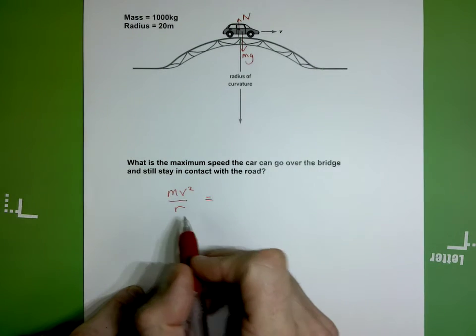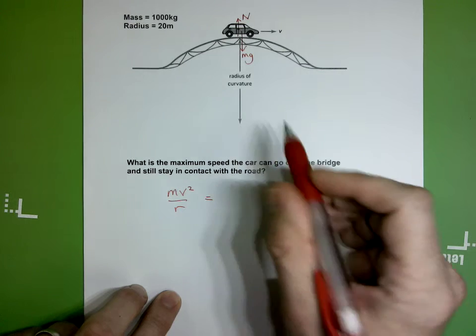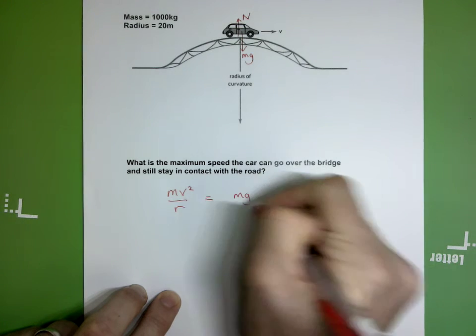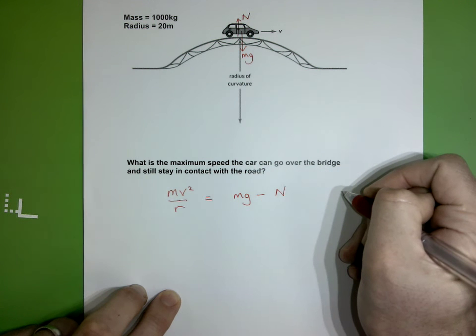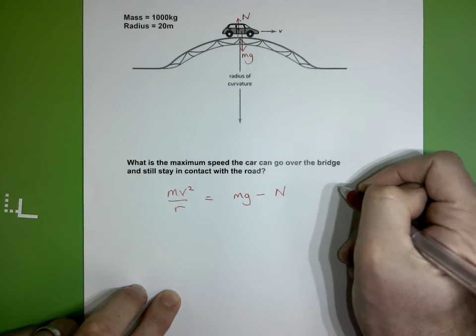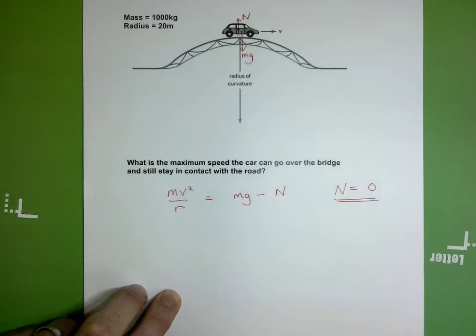Now mv squared over r is just the resultant force towards the center of the circle. So in this context here, it's mg minus N. When the car is no longer in contact with the bridge, it's the condition when N becomes zero. There's no normal reaction from the surface of the road on the car.